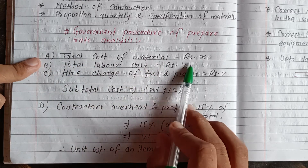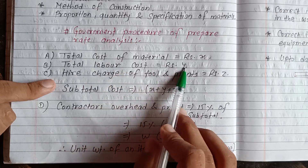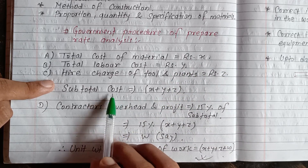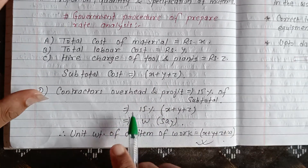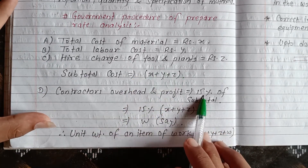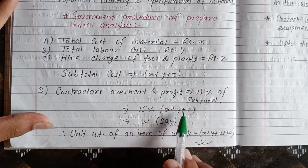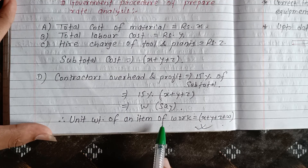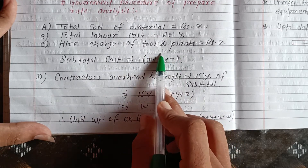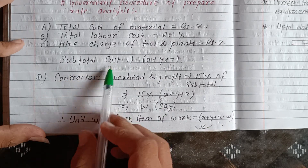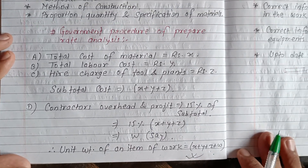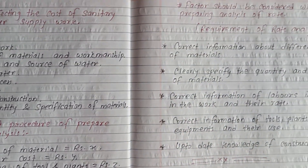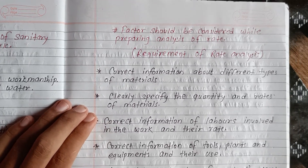The total cost includes: total cost of material (X), total cost of labour (Y), and miscellaneous expenses (Z). The contractor's overhead and profit is fifteen percent of X plus Y plus Z. Therefore the rate of an item of work equals X plus Y plus Z plus overhead and profit — this gives the grand total cost per item.